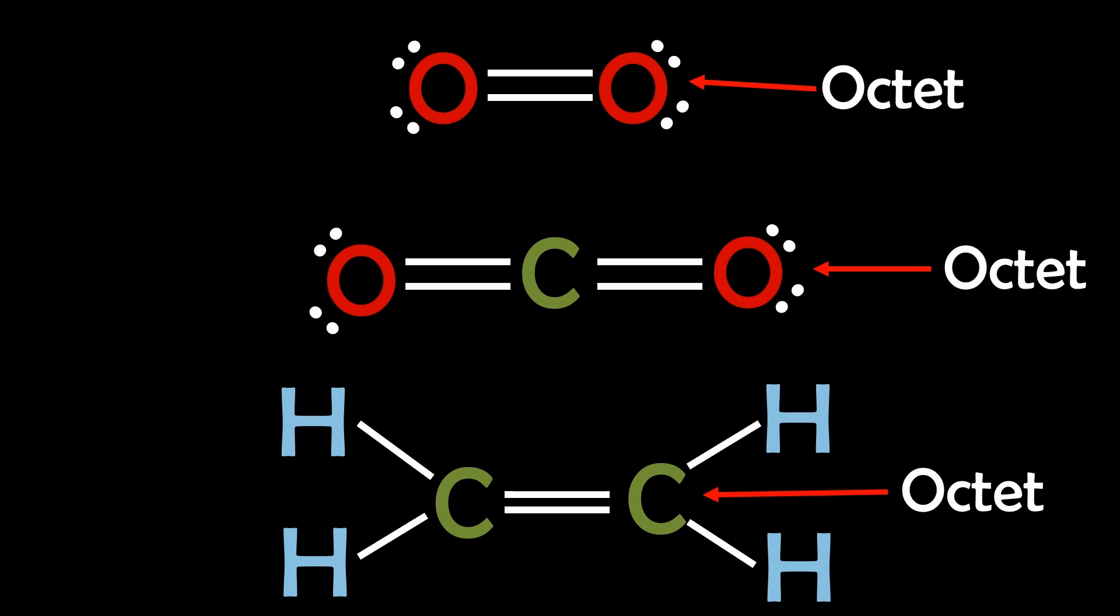It states that atoms tend to gain, lose or share electrons to achieve 8 electrons in their valence shell, resulting in a stable atom or molecule.